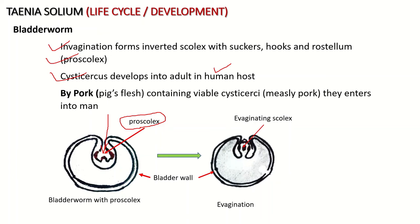When the cysticercus enters the human body, evagination takes place. If measly pork — that is, pig's flesh containing viable cysts — is eaten by a person, the cysticercus enters the human body. The cysticercus can remain viable for several years in the pig's body. The primary host gets infection through undercooked measly pork, after which the proscolex evaginates and after 10 to 12 weeks attains adulthood.